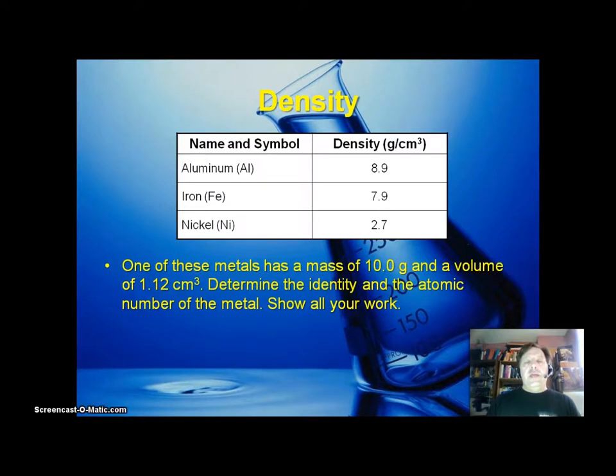You're supposed to take a mass and a volume and find its density. Density is equal to mass over volume. So you take your 10 grams divided by 1.12, and that becomes 8.93. If you look at the table, the closest metal to 8.93 is aluminum at 8.9, which you're also supposed to be able to effectively use estimation and rounding in finding your answers.